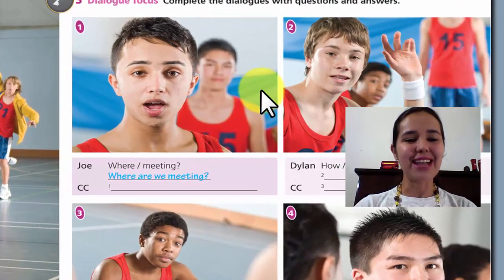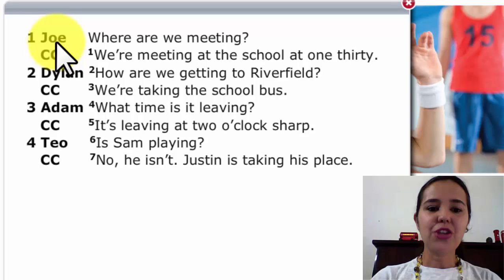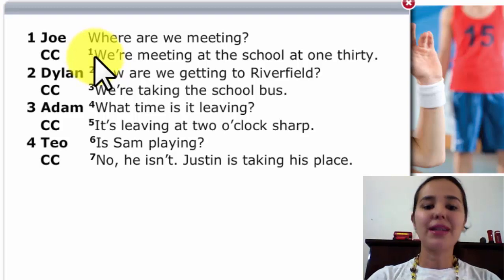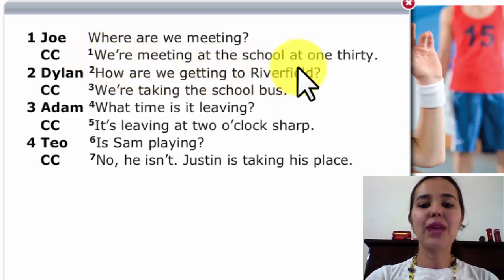Finished? So, let's check. Dialogue 1. Joey and coach Carson are talking. Where are we meeting? Number 1. We are meeting at the school at 1.30.